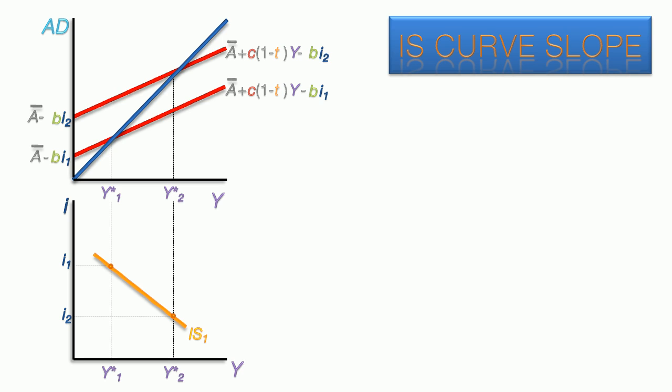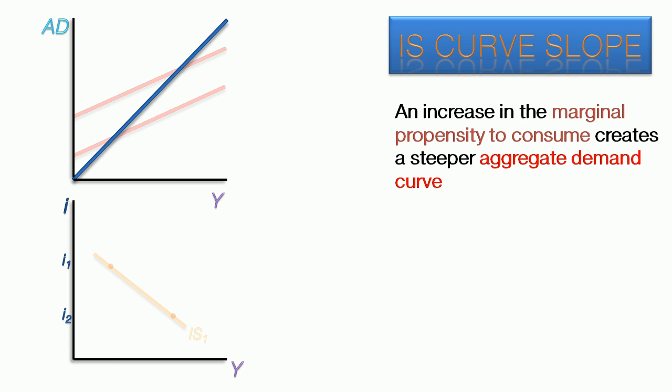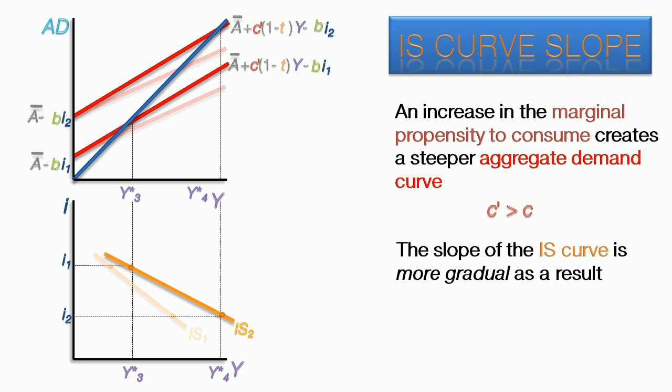Another determinant of the IS curve slope is the marginal propensity to consume. As we saw in the introductory video, an increase in the MPC creates a steeper aggregate demand curve. C prime will represent the higher MPC. When we graph the steeper aggregate demand curves, it becomes apparent that the second IS curve is more gradual as a result of the increased MPC.